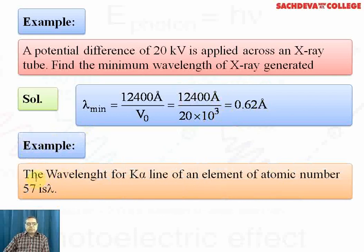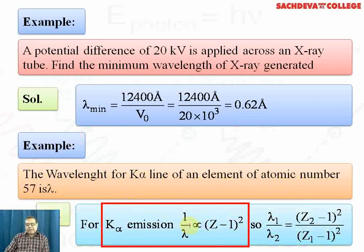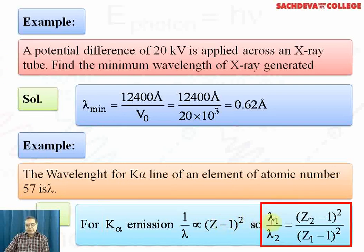Another example: the wavelength for the K-alpha line of an element of atomic number 57 is lambda. For K-alpha emission, 1/λ is proportional to (Z-1)². So λ₁/λ₂ will be in the inverse ratio: (Z₂-1)²/(Z₁-1)².